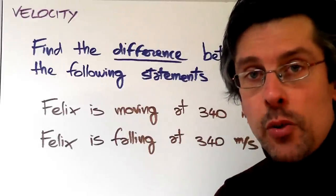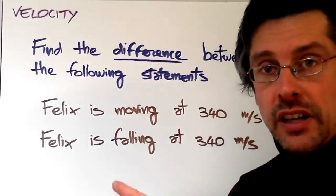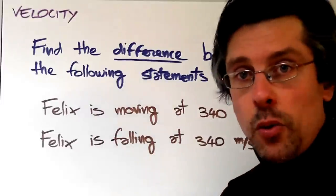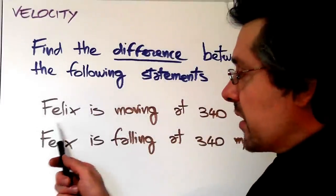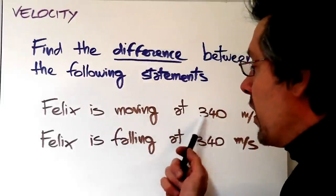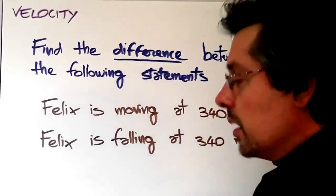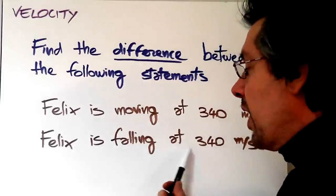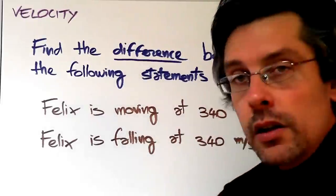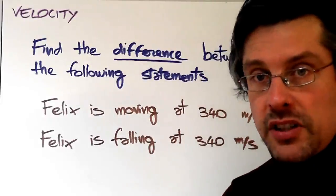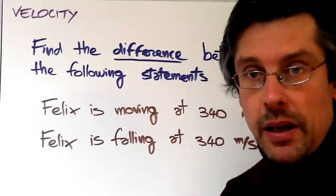In order to understand this difference, we should look at the two sentences which are written on the whiteboard. Felix is moving at 340 meters per second. Felix is falling at 340 meters per second. Now apparently, these two sentences are saying exactly the same thing.